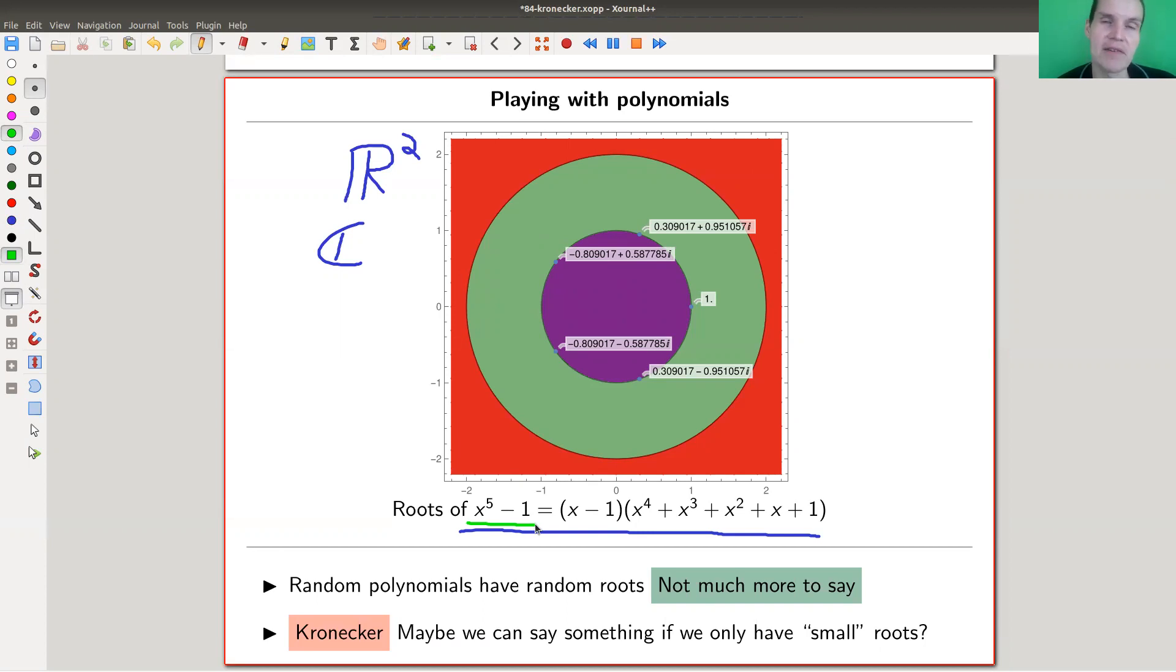Anyway, but in general, I would like to answer the question like I have a random polynomial. What can I say about the roots? Turns out I can't say really much. Random polynomial has random roots that are just lying around somewhere, and I have no idea what's going on. And Kronecker's idea, which I'm going to try to explain in this video, is maybe we have better chance of saying something if we restrict somehow the generality. So maybe we should look at small roots, like roots that end up close or in the purple area, so in the unit circle.